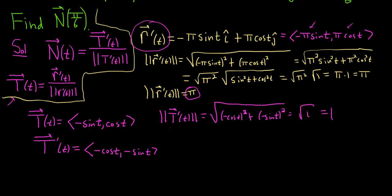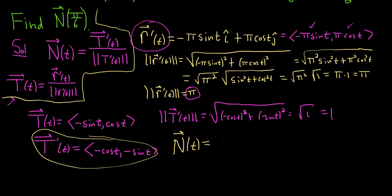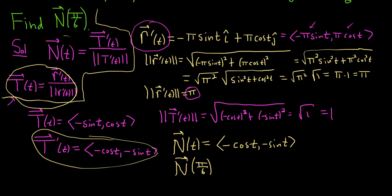Now we can write the principal unit normal vector N(t). It's T prime divided by its magnitude, which is 1, so it's just T prime — negative cosine(t) and negative sine(t). It's not hard, just a lot of steps. You have to use the formula for N(t), then for T(t), so it takes time. It's really beneficial to go step by step.